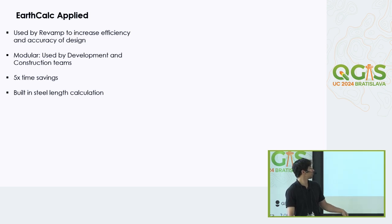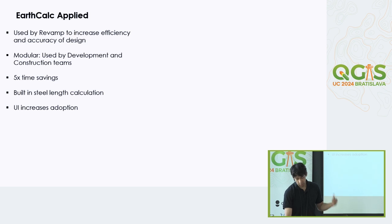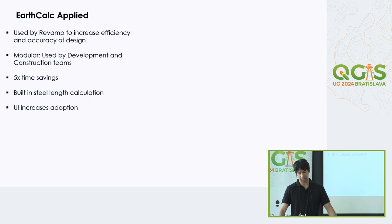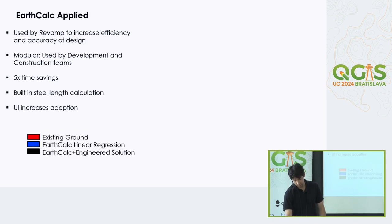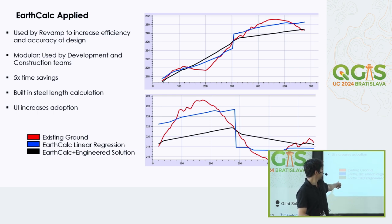By setting piles based on their minimum and maximum length — usually at an average — and having that database, you can query it to gain more information on where you're seeing steel costs and where you're seeing more earthworks, helping clients or the team internally make decisions to adjust those parameters. The UI increases adoption — we previously had this as an external script that people had to manually update, which was a pain. The UI improved adoption significantly.